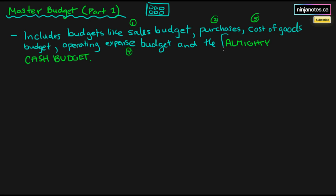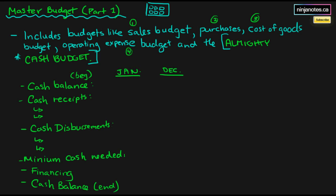And finally, we have the almighty cash budget — I say that because we're probably going to have to do a cash budget on the final. Essentially, a cash budget, if you look at it in your book, it is a little bit convoluted and overcomplicated because they kind of throw it to you all at once. But I've made a really simple cash balance skeleton right here, and I've basically transformed it into just a few key parts.